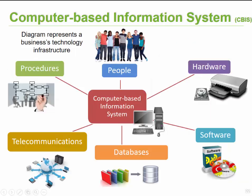To recap: for a computer-based information system to function, we need people, hardware, software, databases, telecommunications, and procedures. In the next few slides we're going to touch on each of these individual components. Let's quickly do a recap on what we mean by hardware.